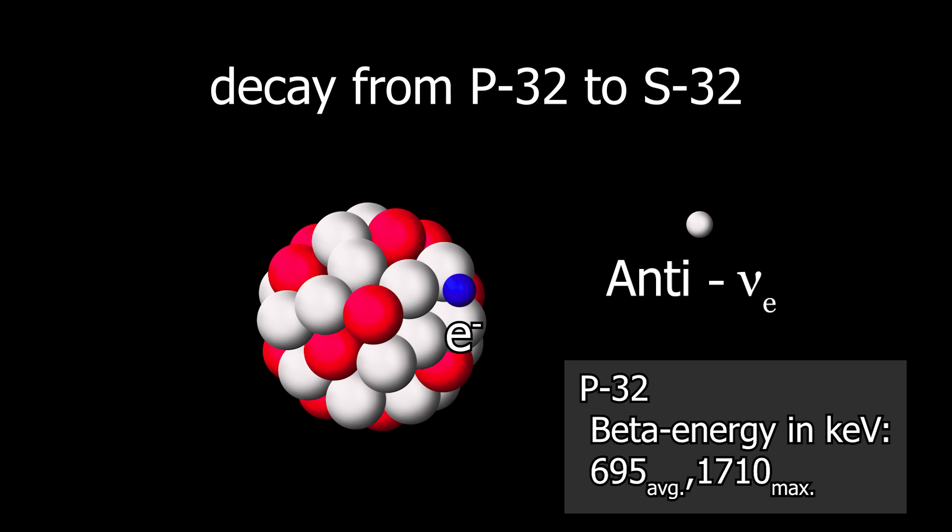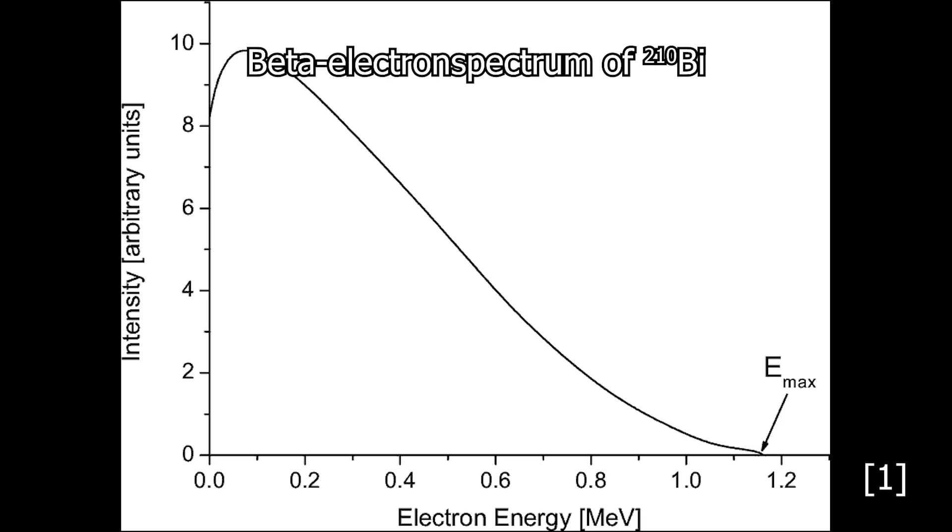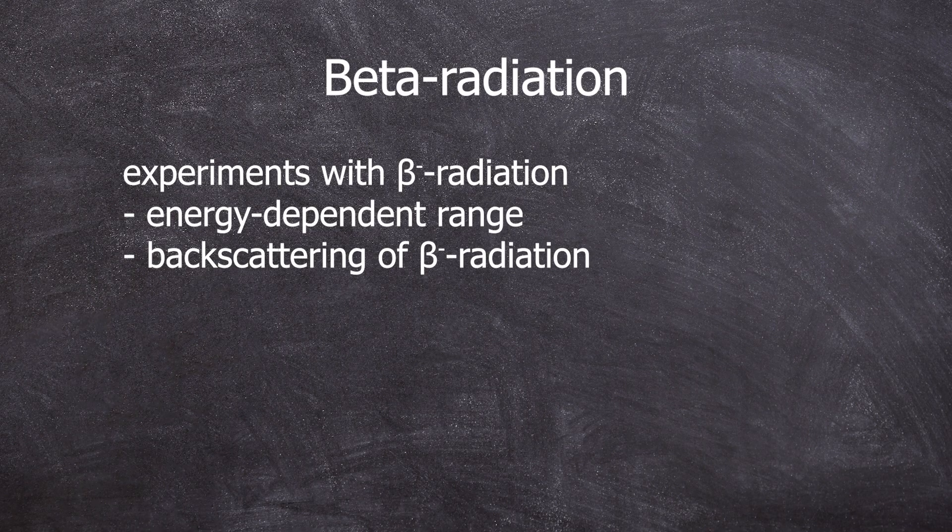The spectrum is continuous, unlike the discrete nature of alpha and gamma radiation. I won't go too much into detail on this for now. But as a last important fact, there is a cutoff at the maximum beta energy because the neutrino has a mass and this needs to be accounted for.